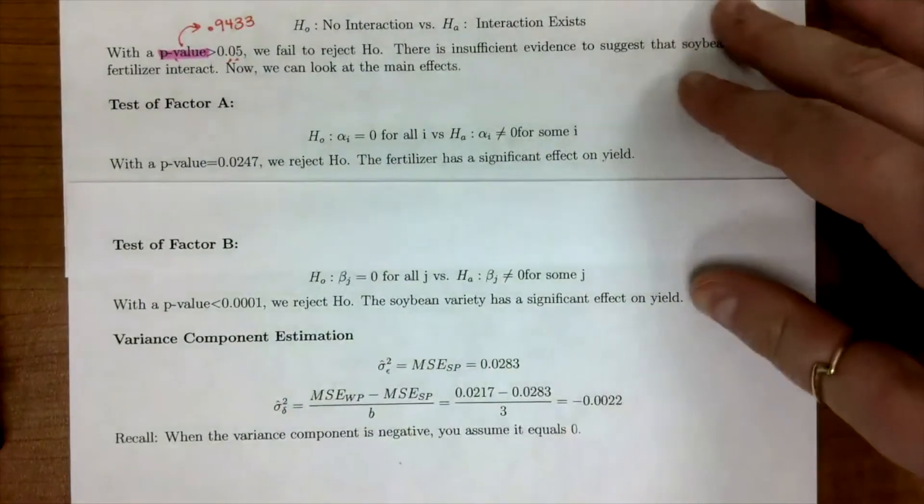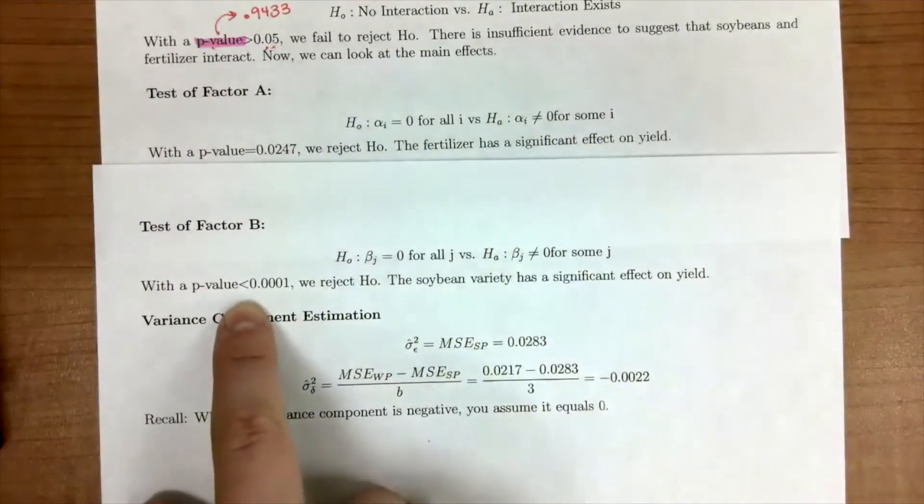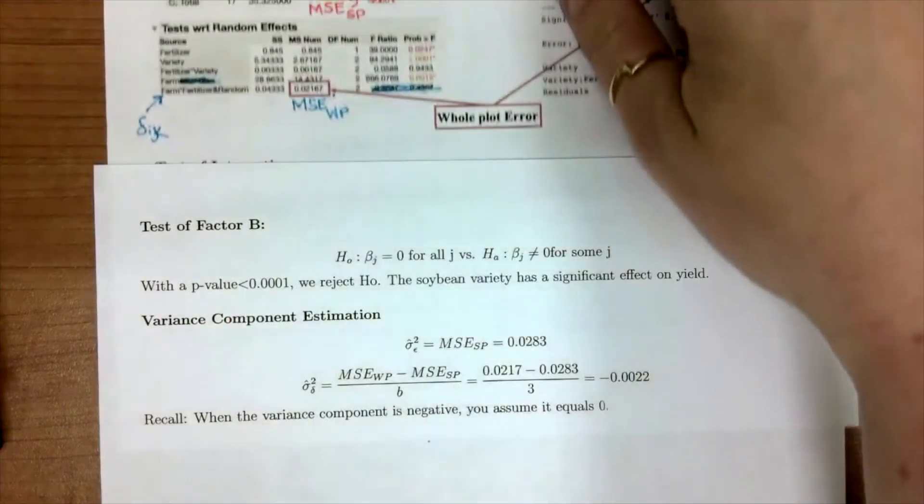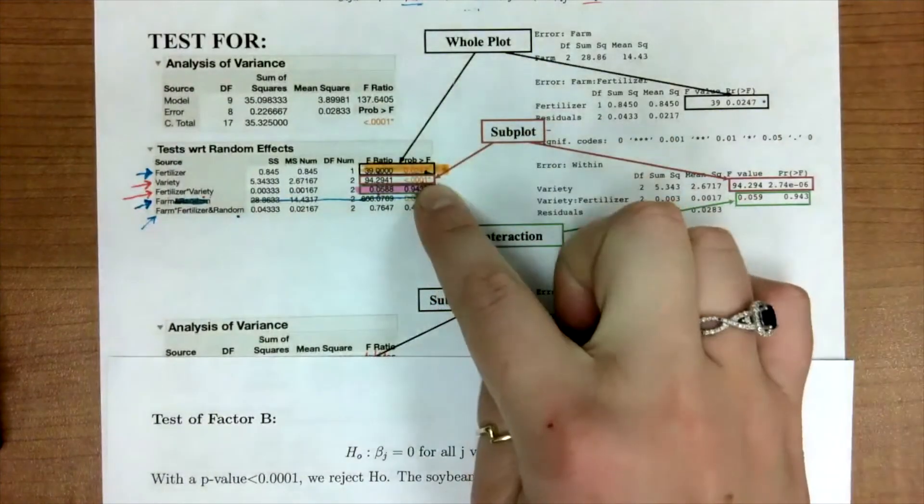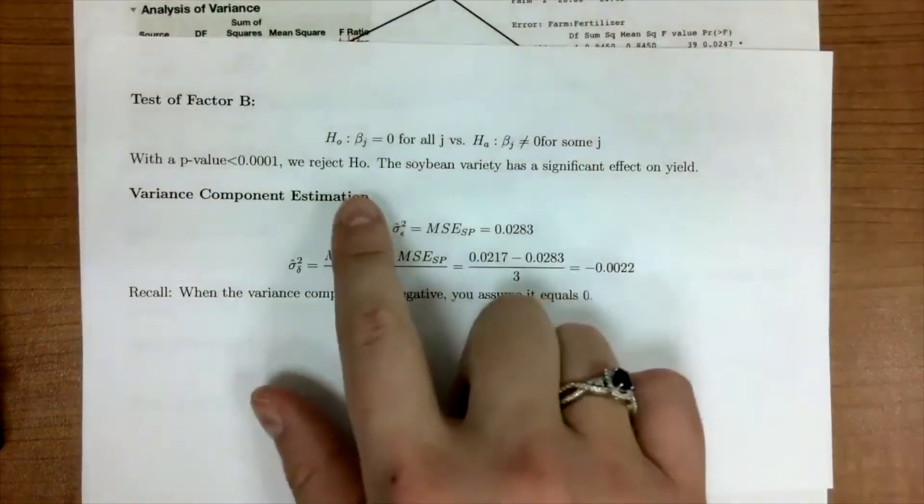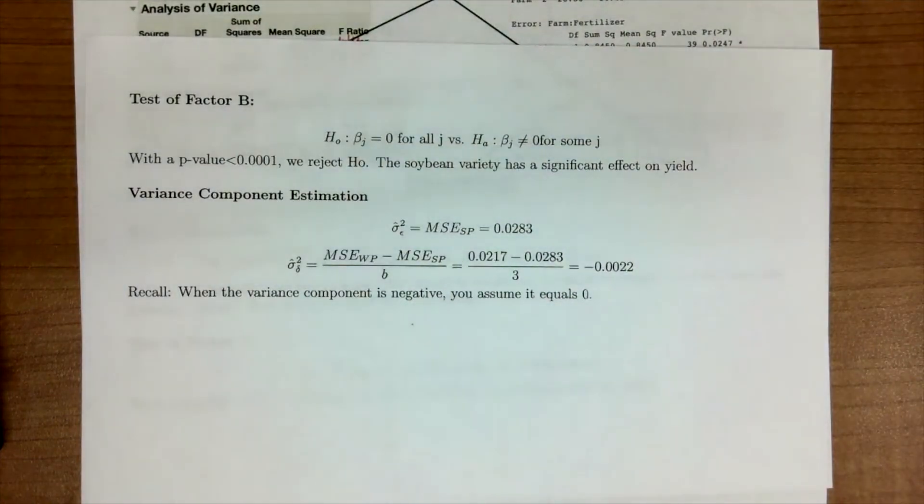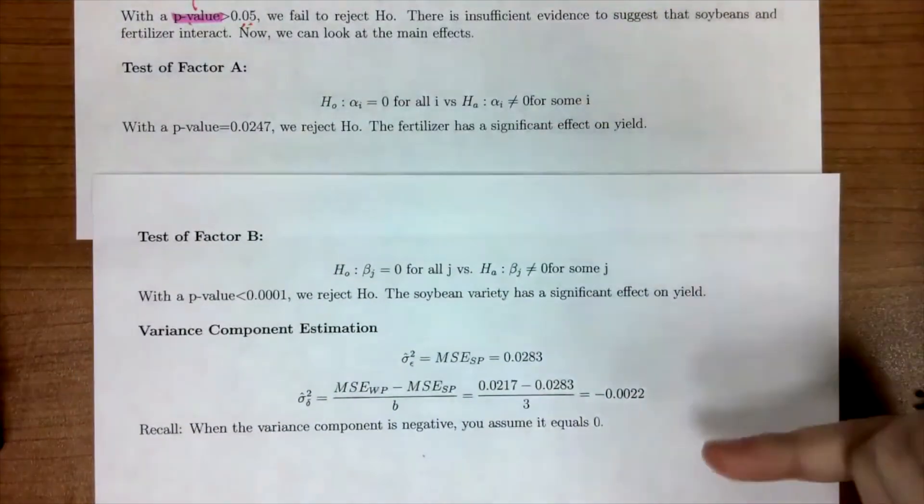We can also continue our analysis to looking at the factor B or the subplot. In this case, we got a p-value that was less than 0.001. This p-value is going to come from this red box right here, and so we're going to reject our null, and so soybean variety has an effect on yield. So we just went through and tested all these.